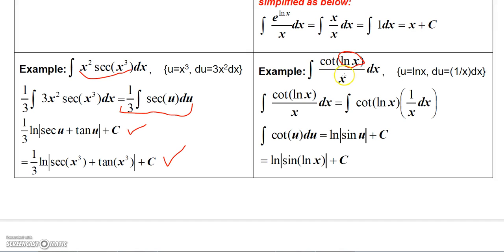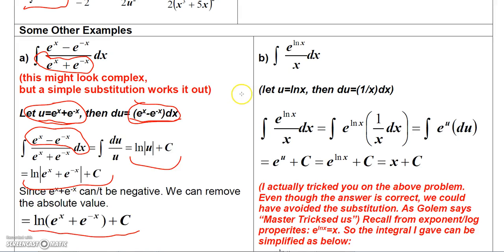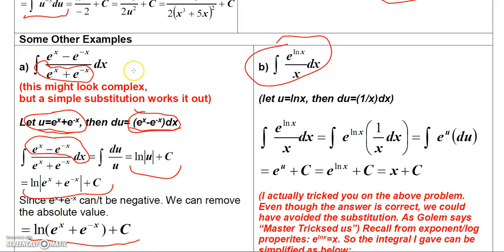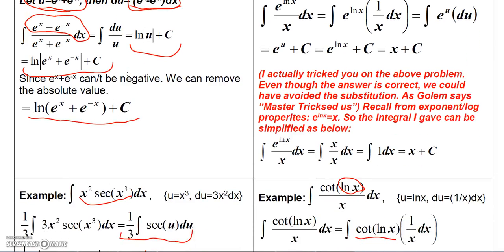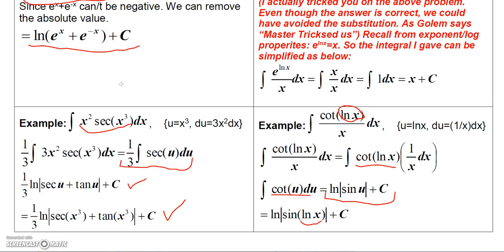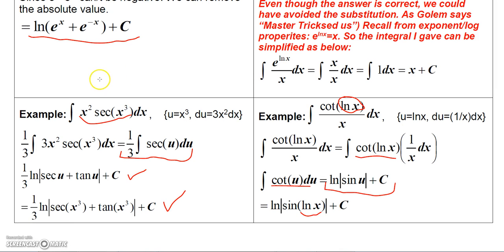For the cotangent example, let u equal ln(x), so du is (1/x) dx. The integrand becomes cotangent(ln x) times (1/x) dx, which is the integral of cot(u) du. Using the formula, that integrates to ln|sin(u)| plus C. Replace u with ln(x) for the final answer. Note: e^(ln x) is simply x, so that one integrates very simply.